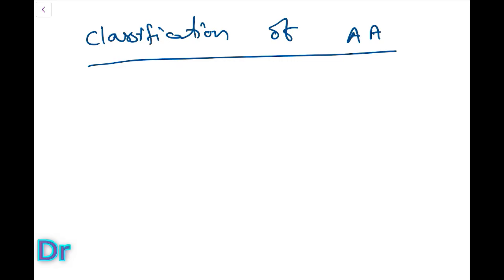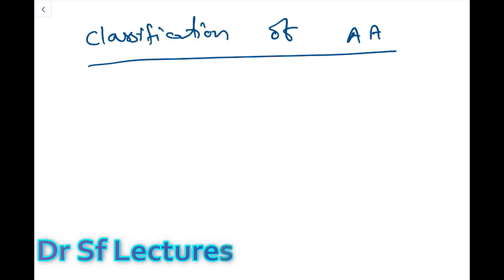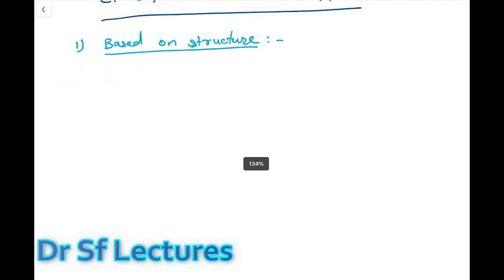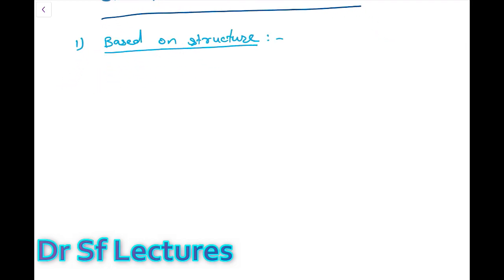There are two kinds of classification. The first classification is based on structure — there are seven groups. The second one is based on nutritional requirement. Now first we are going to discuss based on structure.